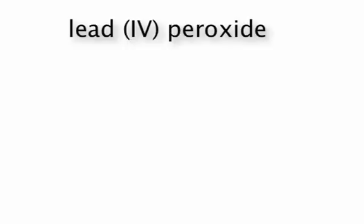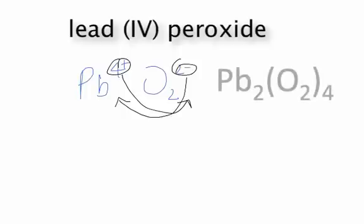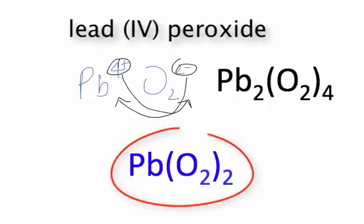So what would lead(IV) peroxide be? So lead would be Pb^4+. Peroxide would be O2^2-. So you would take this and put it down here. You take this and you put it down there. So you would get Pb2(O2)4. So in this case, you could reduce it down a little bit more. So it's Pb(O2)2 or lead(IV) peroxide. And that's how you name using metals with more than one charge and polyatomic ions.